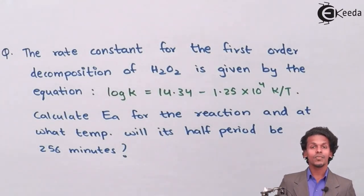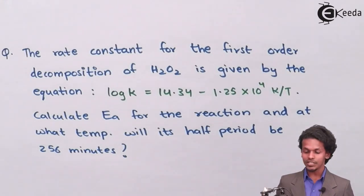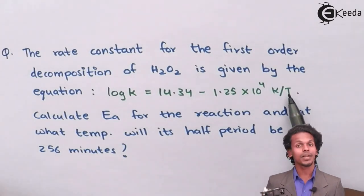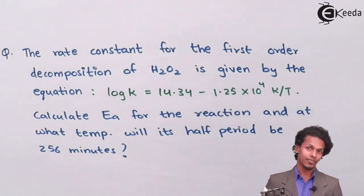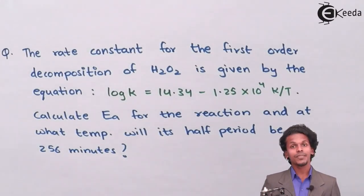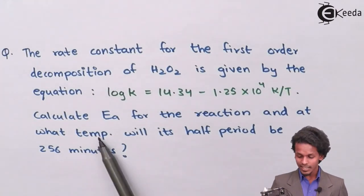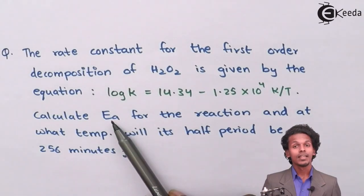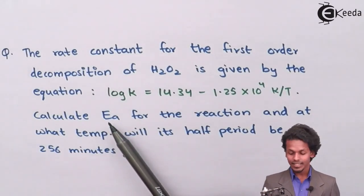We have to calculate the activation energy Ea for the reaction, and at what temperature will its half period be 256 minutes. The temperature has not been given a numerical value — it is represented as T itself. So we need to calculate both T and Ea.